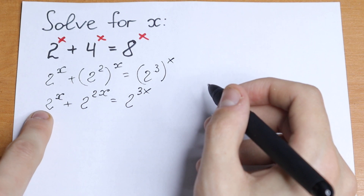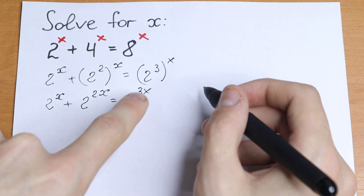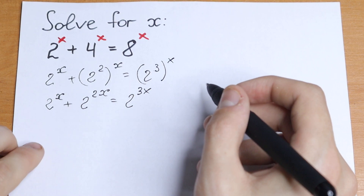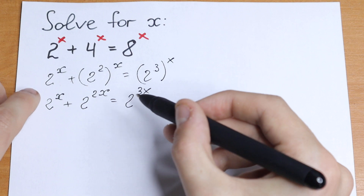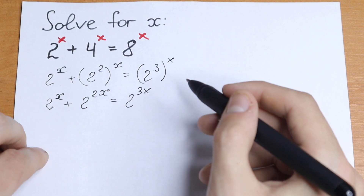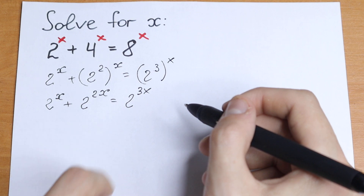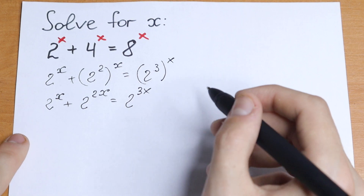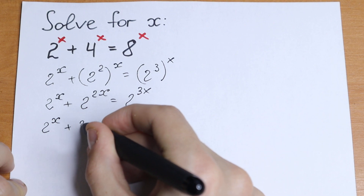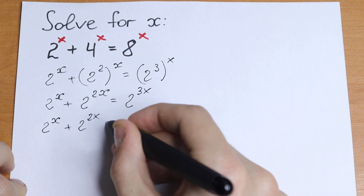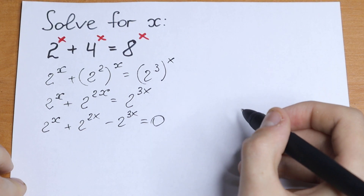So right here we have 1 times 2 to the power x, right here we have 2 to the power 2x, and right here 2 to the power 3x. We can factor out 2 to the power x as a common factor. So I bring the 2 to the power 3x to the left: 2 to the power x plus 2 to the power 2x minus 2 to the power 3x equal to 0.